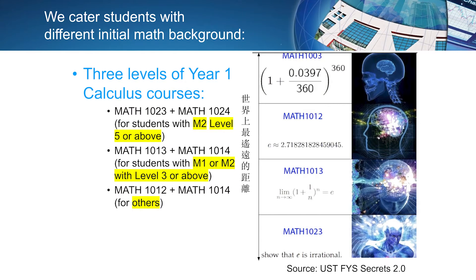Other than the diversity of the program that offers different tracks, we also offer courses of different tiers that cater to students with different initial backgrounds in math. For example, in year one, most of the students will study calculus.